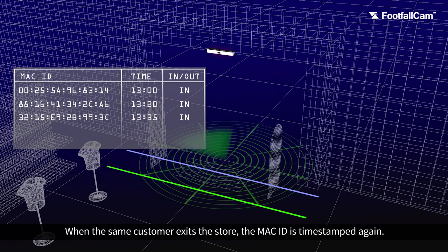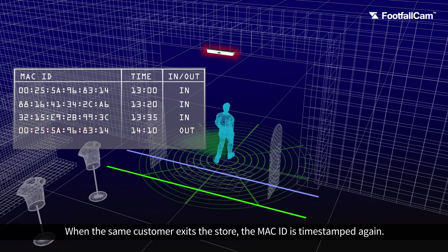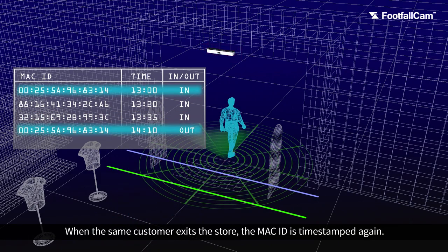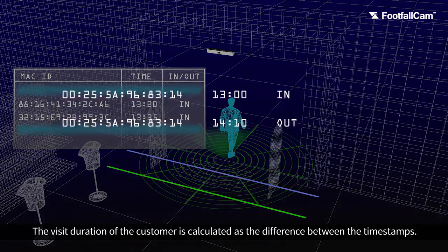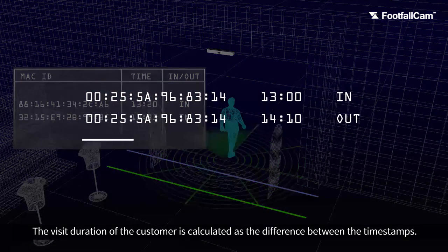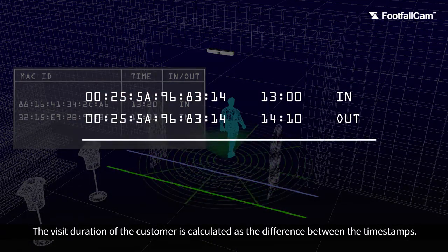When the same customer exits the store, the MAC code is time-stamped again. The visit duration of the customer is calculated as the difference between the two time stamps.